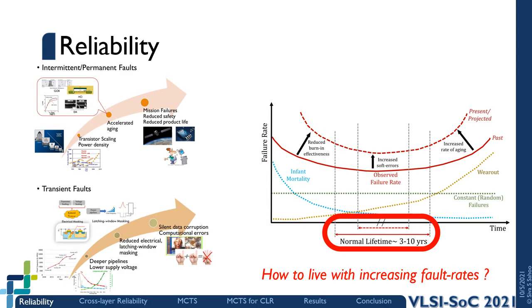Reliability from an electronic design perspective is the ability of the system to function according to specifications even in the presence of faults. When we say faults, we are broadly referring to two kinds. Transient faults occur randomly due to accumulation of electric charge and usually result in bit flips. Intermittent and permanent faults, on the other hand, are in general caused more by aging and can result in both functional and timing failures.